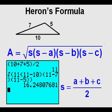And the answer is about 16 and a quarter squared units. That answer should make sense. If we use 10 for a triangle base, its height is about 3 units just visually. 10 times 3 is 30, and 30 divided by 2 is 15 — pretty close to the 16 and one-fourth calculated using Heron's formula.